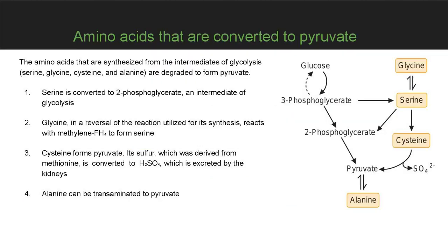The amino acids synthesized from intermediates of glucose — serine, glycine, cysteine, and alanine — are degraded to form pyruvate. Serine is converted to 2-phosphoglycerate, an intermediate of glycolysis. Glycine, by reversal of the reaction used for its synthesis, reacts with methylene tetrahydrofolate to form serine. Cysteine forms pyruvate, and its sulfur, derived from methionine, is converted to H₂S or sulfate, which is excreted by the kidneys. Alanine can be transaminated to pyruvate.